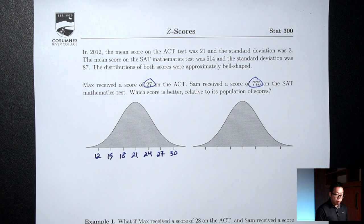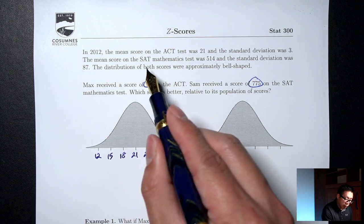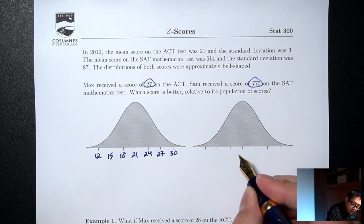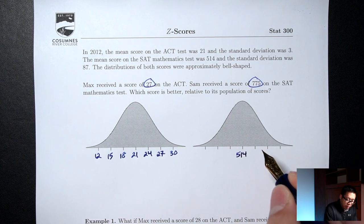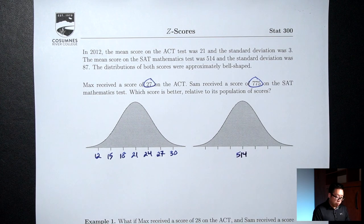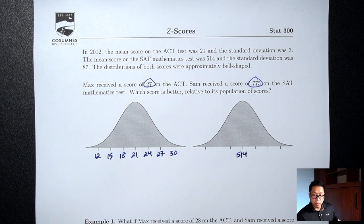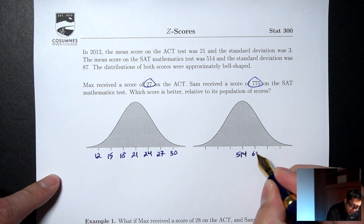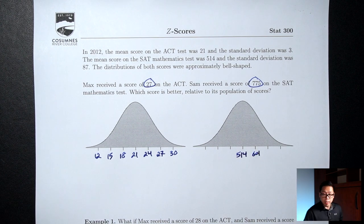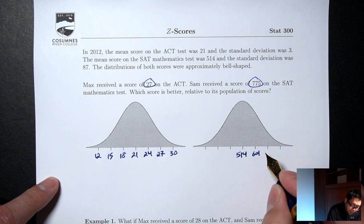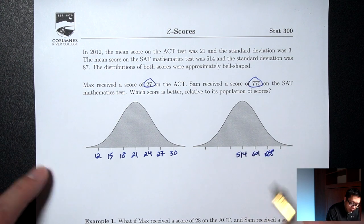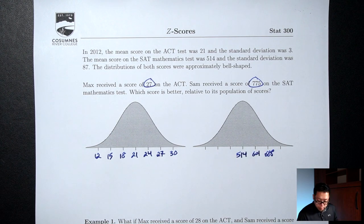Now we'll do the same thing for the SAT Math. The mean for the SAT Math was 514 — that goes in the middle. Go up three times: 514 plus the standard deviation of 87 is 601, plus 87 again is 688, plus 87 one last time is 775.